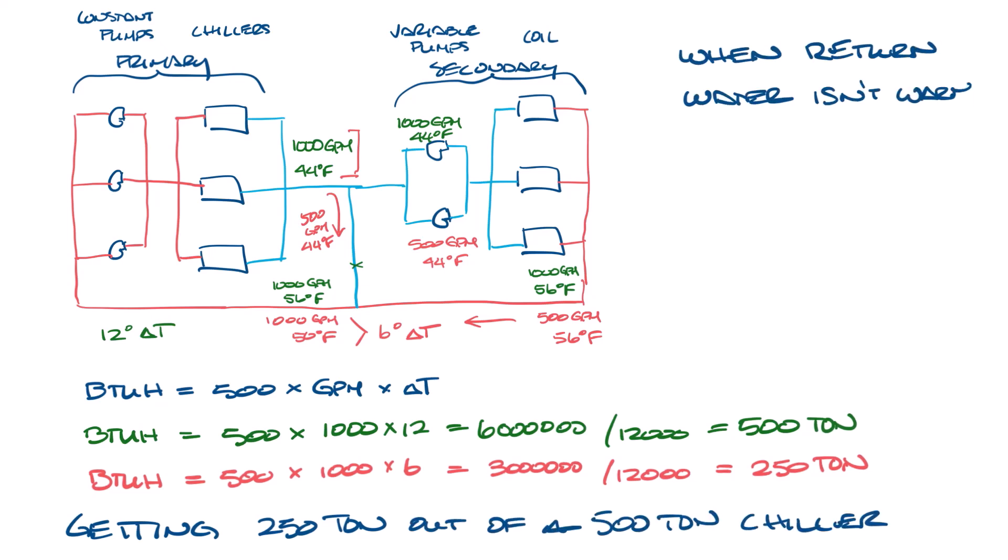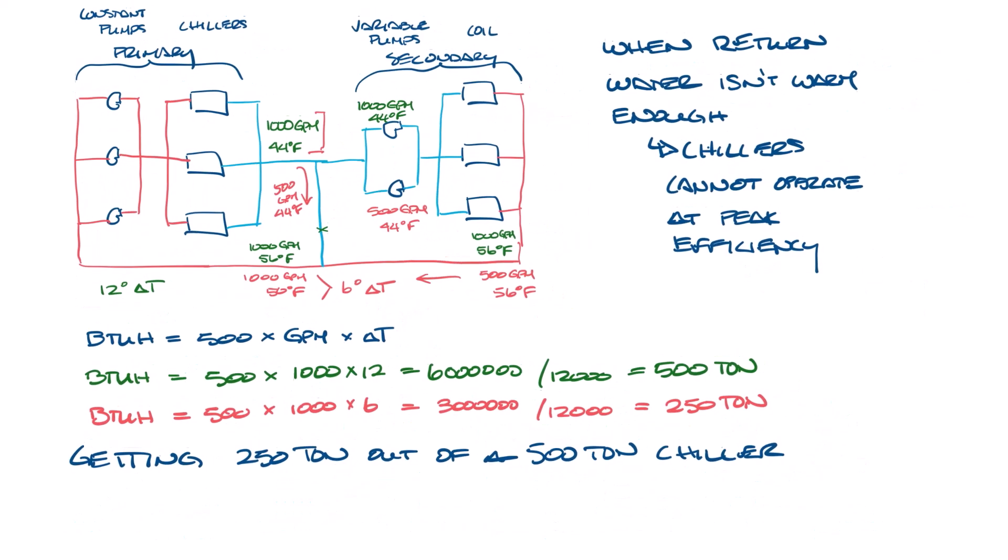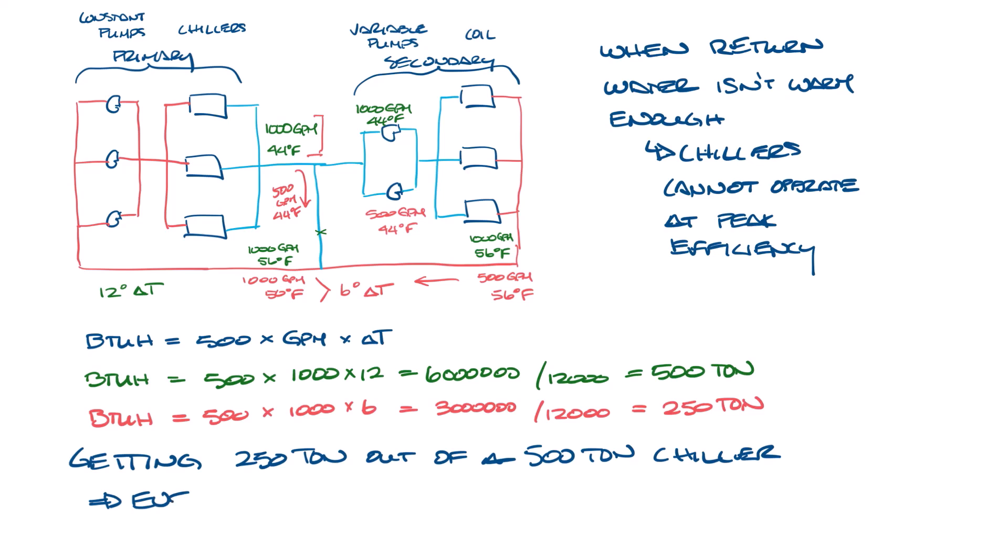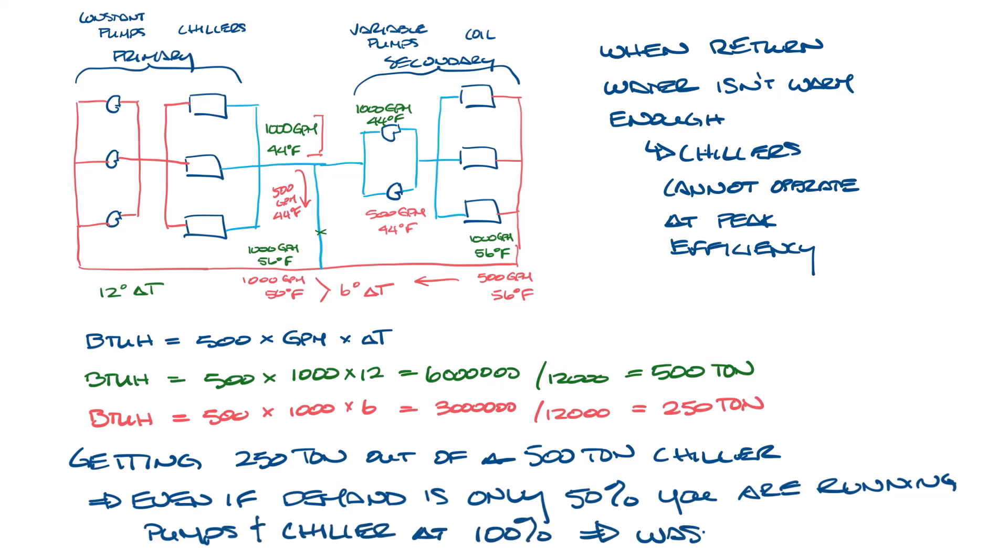When the return water isn't warm enough, chillers can't operate at peak efficiency. So even if the demand was such that you only needed 50% of the cooling, running the pumps and chiller at 100% for 50% load is not efficient. This wastes energy.